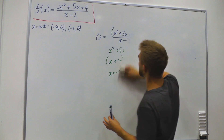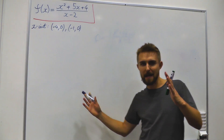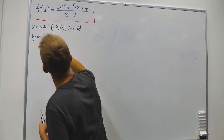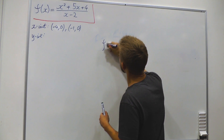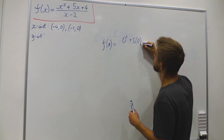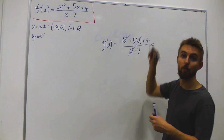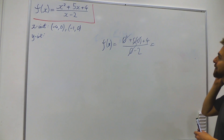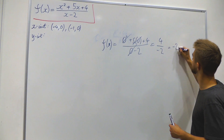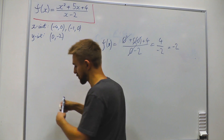On to the y-intercepts — where does our function cross the y-axis? That's when x = 0. So f(0) = (0 squared + 5×0 + 4) / (0 − 2). All the zero terms disappear, leaving 4 divided by −2, which gives us −2. So our y-intercept is at (0, −2).